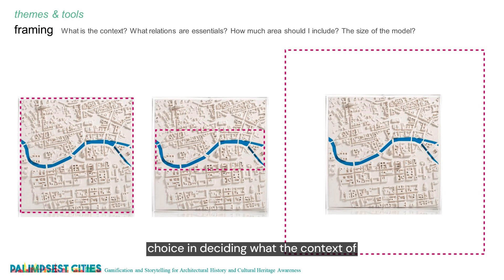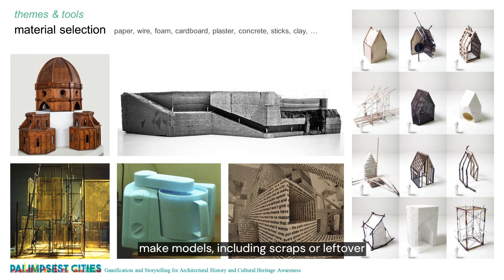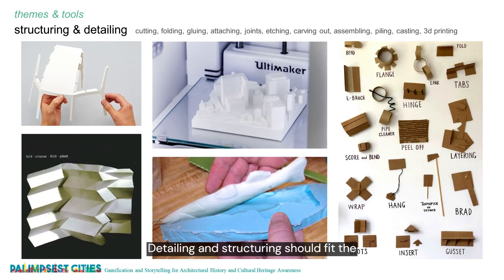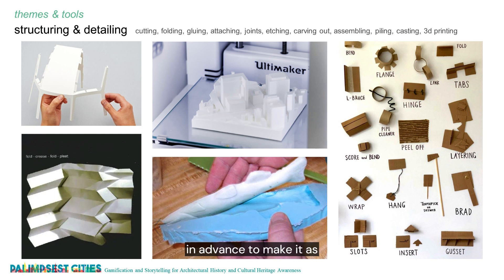The framing of a model is a deliberate choice in deciding what the context of the study object will be. Scaling and framing also determine the real life size of the model, which has practical implications on things like how it will be carried around, how much material will be used, or how many people can work on it simultaneously. All kinds of materials can be used to make models, including scraps or leftover materials. It's important to test and explore the potentials of each material in terms of its expression, structural capacity, practicality or fitness for the intended study. Digital models also provide a wide range of immaterial characters, opportunities and limitations to be explored. Detailing and structuring should fit the intentions for that model. One can choose to work without glue, make the pieces detachable for a game-like model. A quick fold can allow exploring different forms in the shortest time. For an enduring exhibition model, firm joints should be studied and tested in advance to make it as enduring as possible.